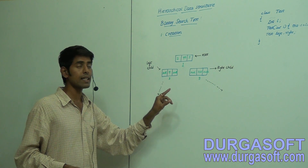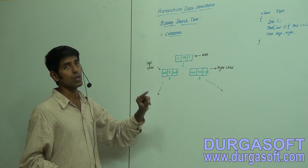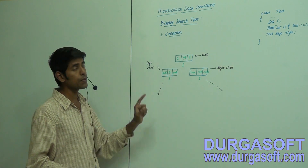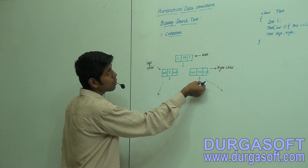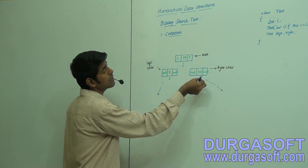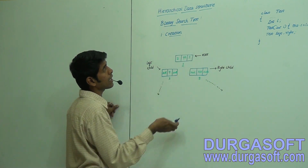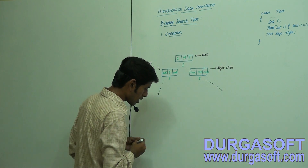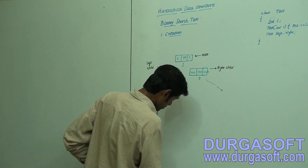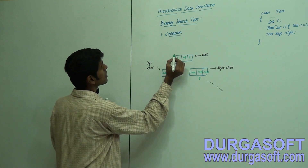If the right child data is greater than the root node, it will contain the right child node reference in its right field. The left field contains the left child reference, and the right field contains the right child reference.